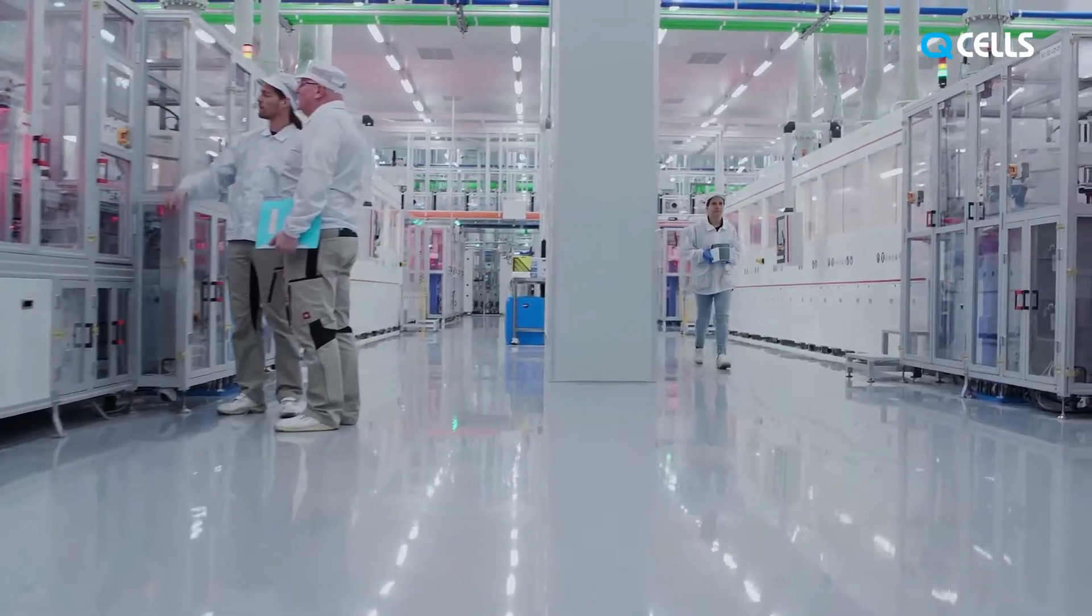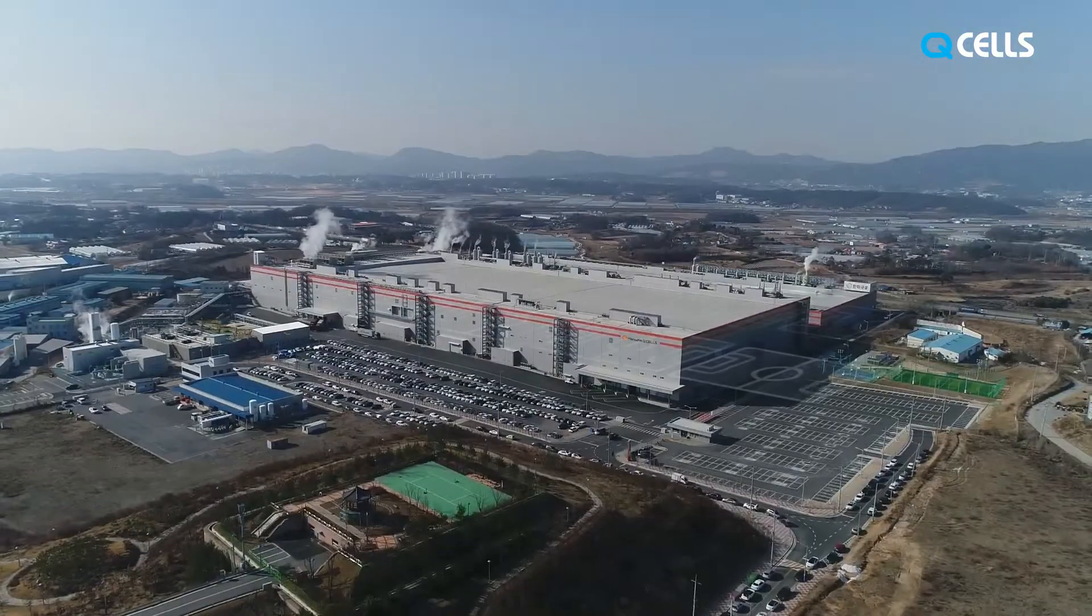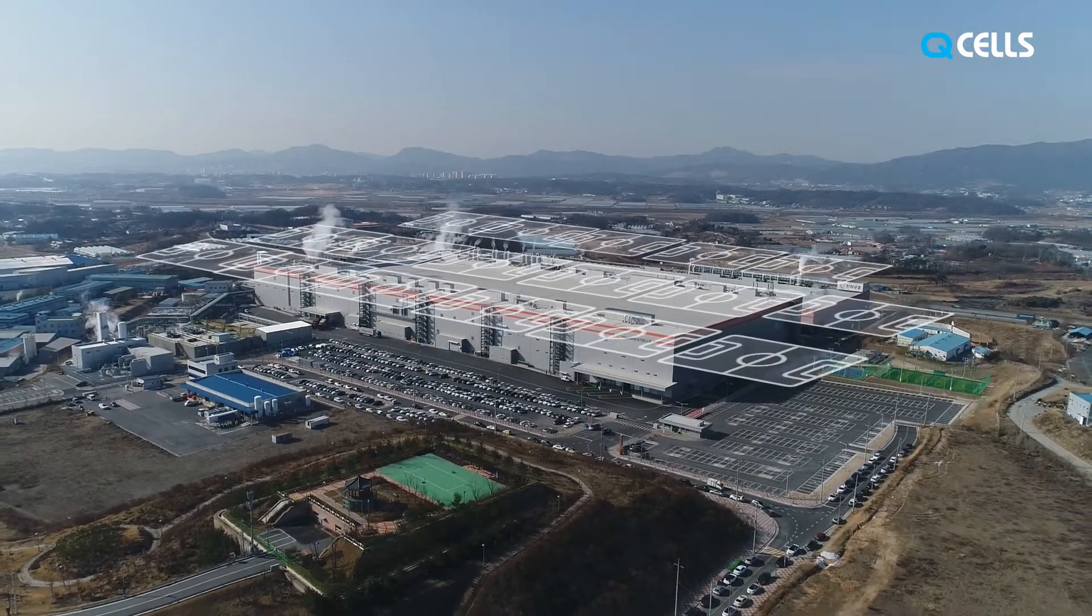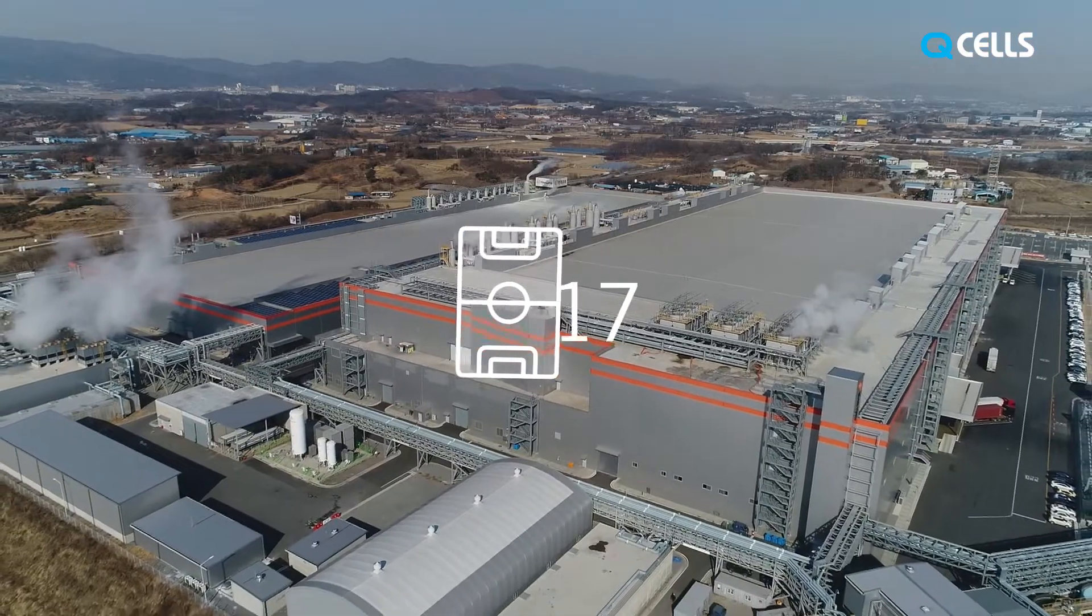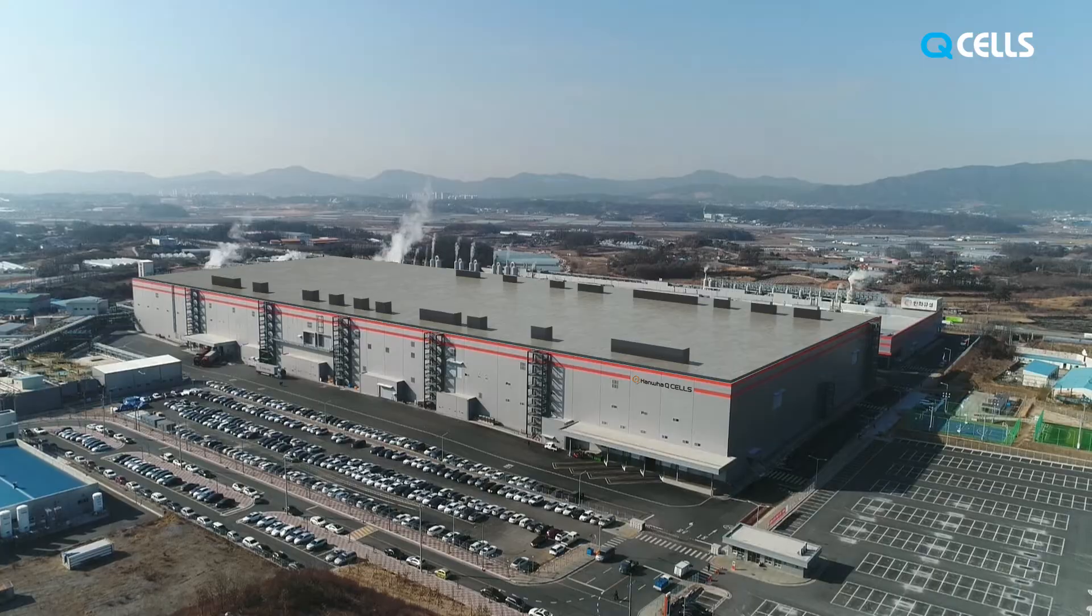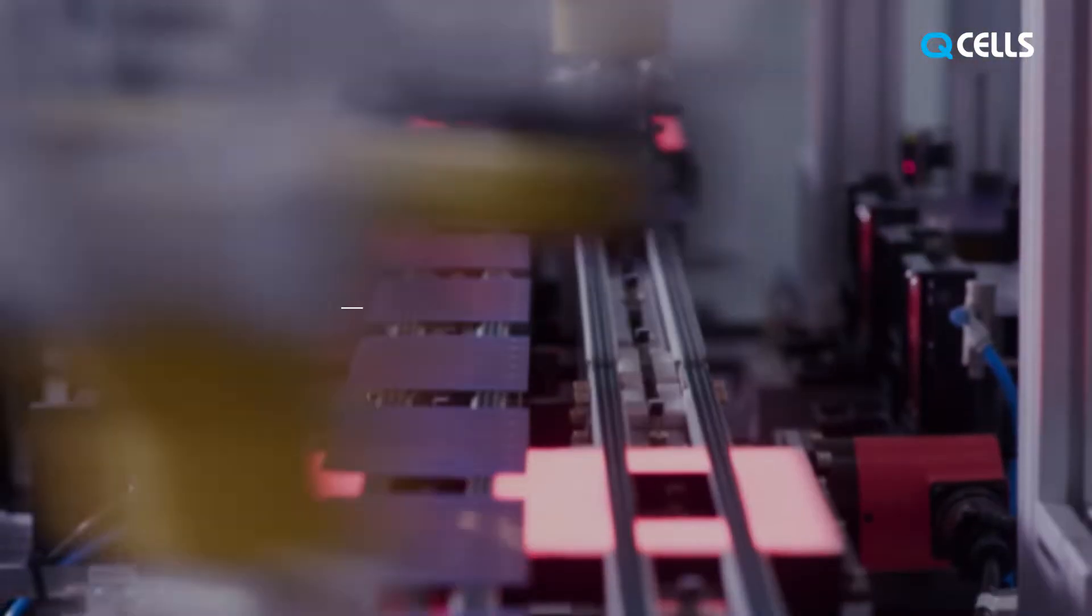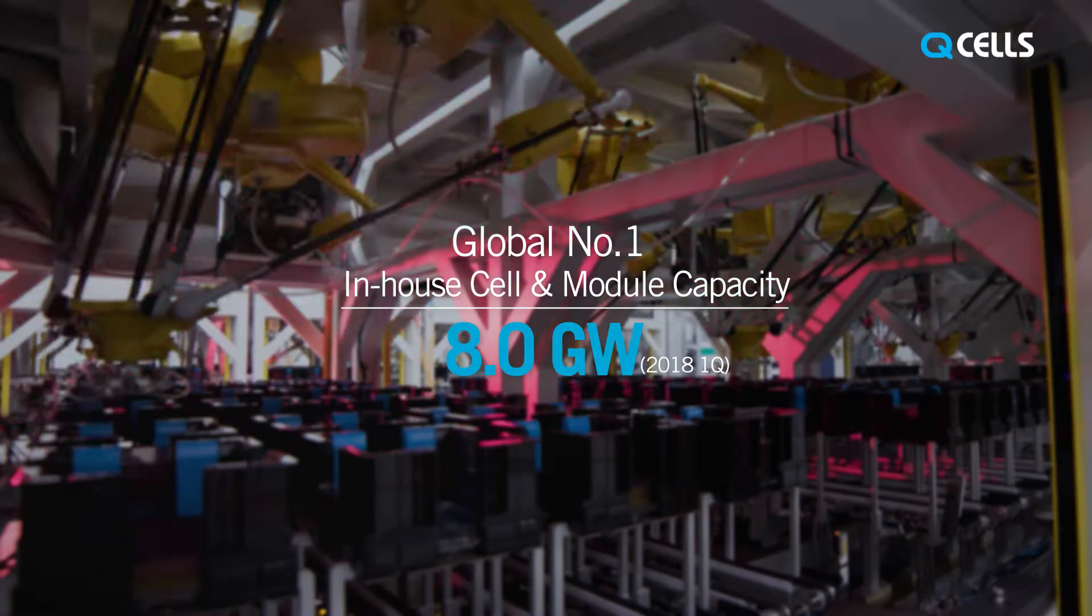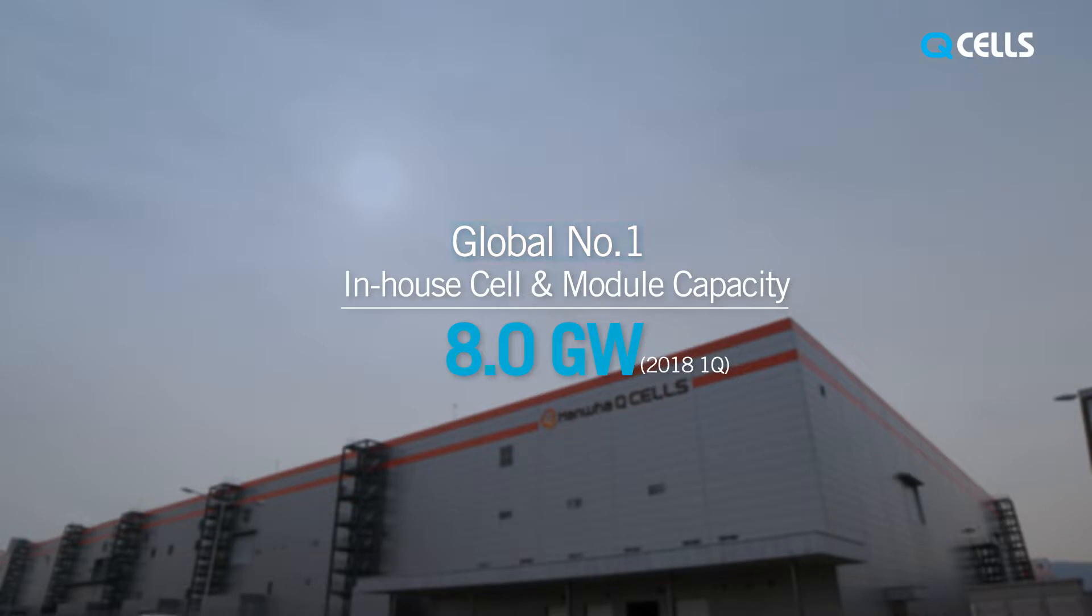Qcells is the largest manufacturer of solar cells produced in-house. The factory is bigger than 17 football fields. It is capable of producing 2.2 million high-quality solar cells every day, a total of 8 gigawatts of cells and modules.